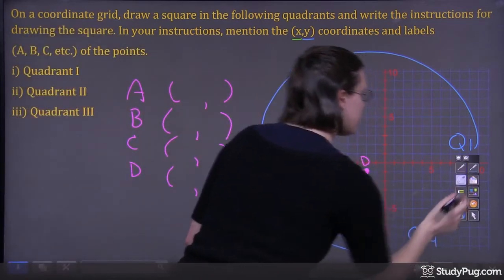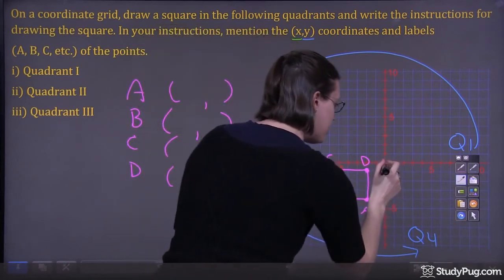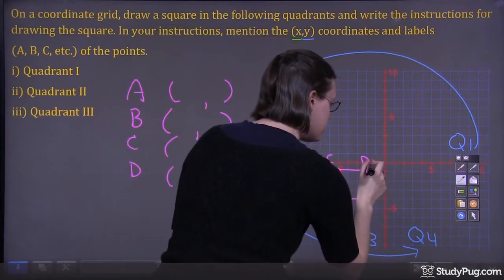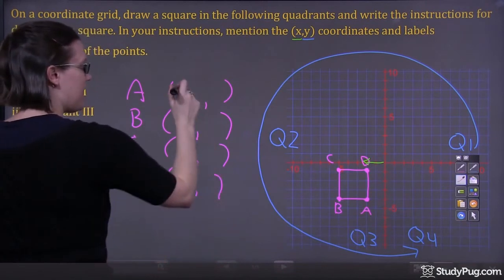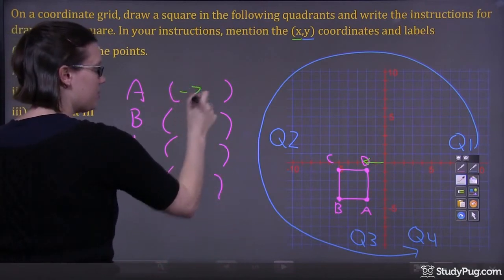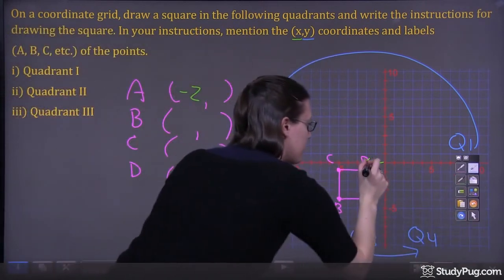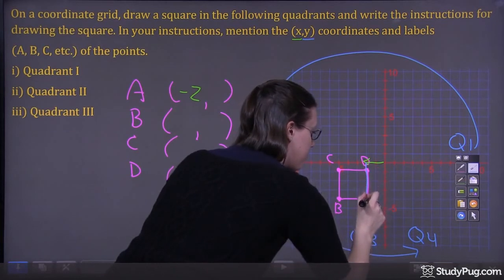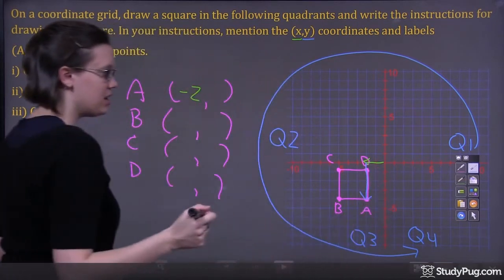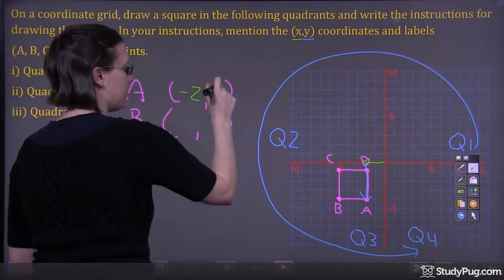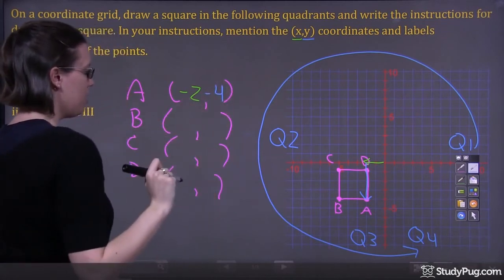Let's first focus on A. We're moving 1, 2 to the left — so we have negative 2 for X. And we're moving 1, 2, 3, 4 down — negative 4 for Y. So 2 to the left and 4 down gives us (-2, -4).